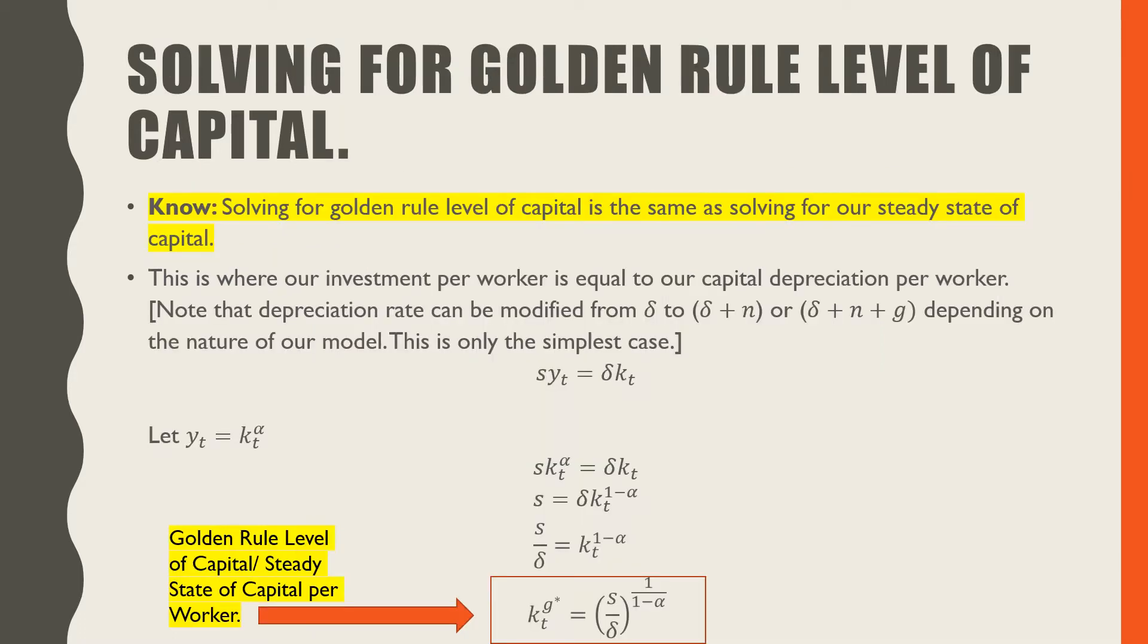In terms of solving for your golden rule level of capital, we can see that there's a little bit of algebra involved. Just a couple of points. Know that when you're solving for your golden rule level of capital, it's the same as solving for your steady state of capital. This is where our investment per worker is equal to our capital depreciation per worker.